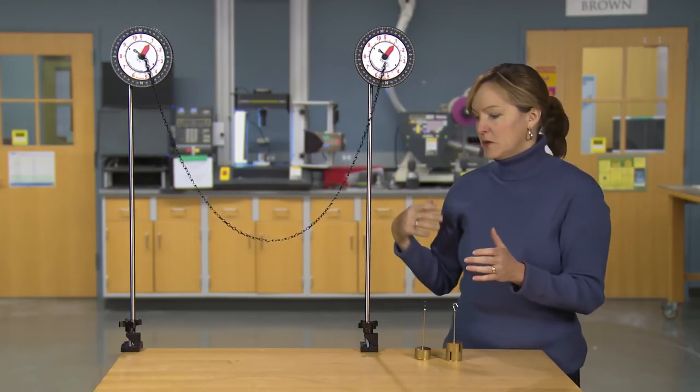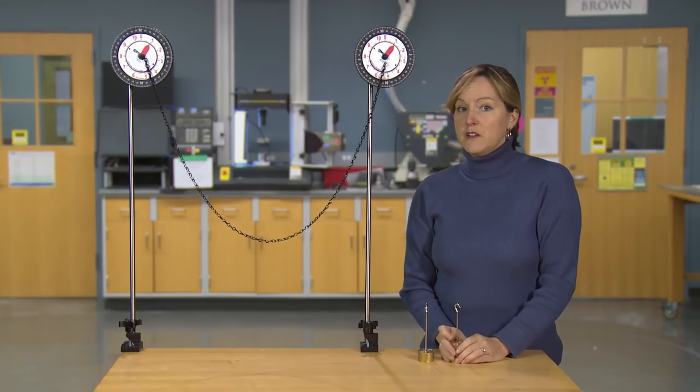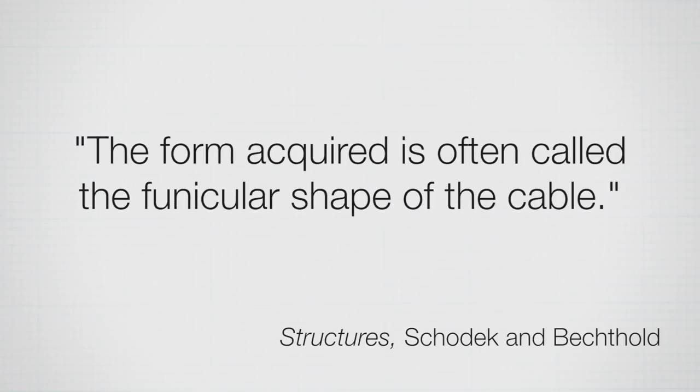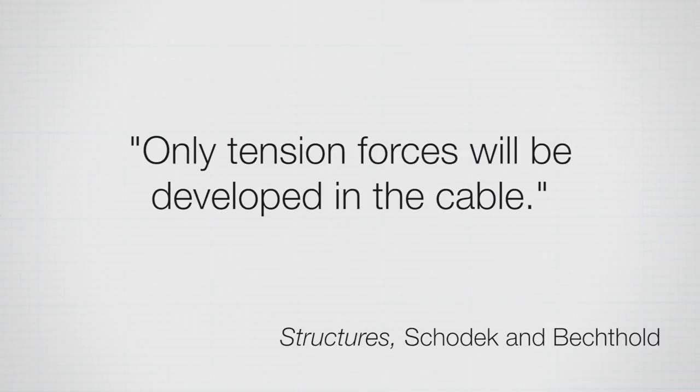So the definition given by Shodek and Betchold in their book, Structures, is a cable subjected to external loads will obviously deform in a way dependent on the magnitude and location of the external forces. The form acquired is often called a funicular shape or form of the cable. Only tension forces will be developed in the cable, and that's the key to me.